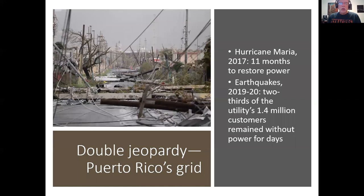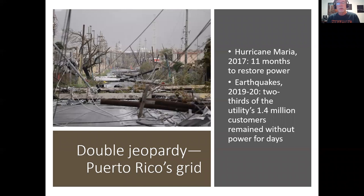Another example: Puerto Rico in 2017 and 2019. In 2017, Hurricane Maria did tremendous damage to the electric grid — it took 11 full months to restore power. Then, just as the grid was being rebuilt, there were earthquakes in 2019 and 2020, and two-thirds of the utility's customers remained without power for days.